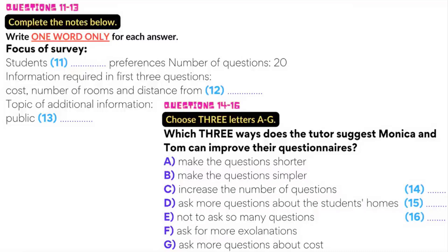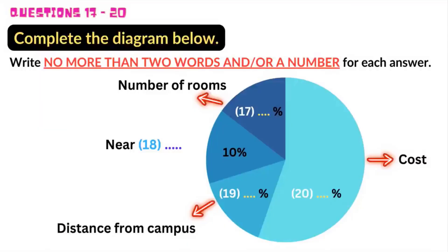You'd get quite a lot more information if you did that. We've already got some results from our first questionnaire. Do you think we could use them? I don't see why not. What have you found out so far? The number of rooms was only important for 16% of the people we asked — a lot of students are quite happy to share a room. And even fewer people were concerned about being near a bus stop — only 10%. Distance from the university was quite important: around 20% wanted to be close to campus. And the cost was by far the most important factor — 54% were concerned with it.